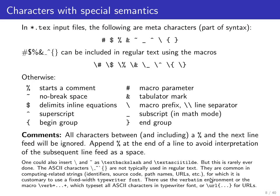There is the verbatim environment, and there is the macro \verb followed by an arbitrary delimiter character — for example, a plus — then an arbitrary string not containing that delimiter, then the delimiter again to close it. You can choose whatever end character you want. This typesets all the ASCII characters between the delimiters in a typewriter font, with all meta character semantics disabled. Use \verb to quote source code inline, and the verbatim environment for multi-line source code.